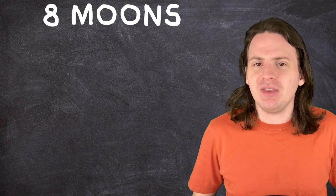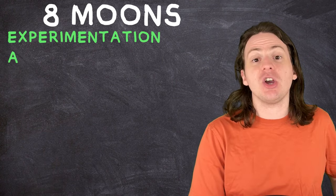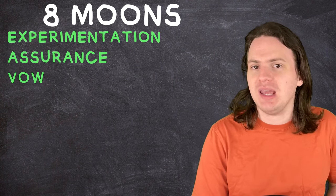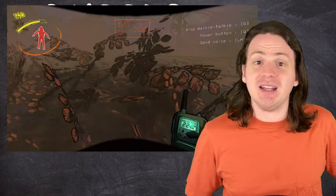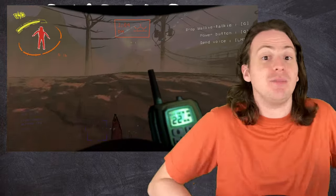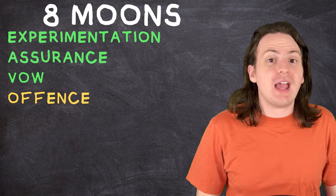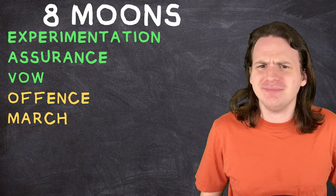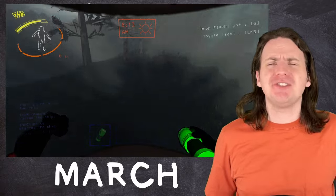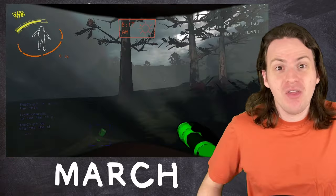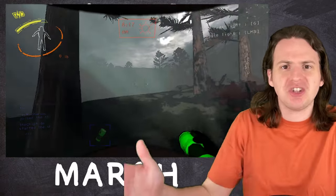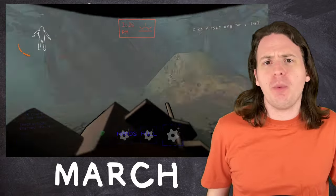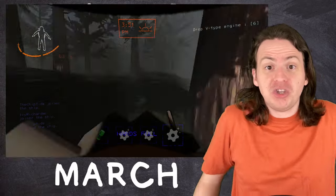So for those who aren't familiar or just need a refresher, there are currently eight moons in Lethal Company. Experimentation, Assurance, and Vow are the three easy moons. In general, they've got less stuff to find, but also less monsters to contend with. Offense and March are both listed as medium difficulty. Though, let's be honest, the March is super easy. It's great. The door to the factory is a straight shot from the back of the ship. It's super quick to bring all your stuff back.